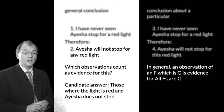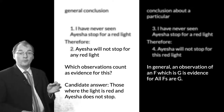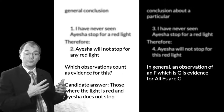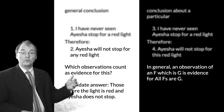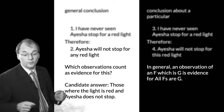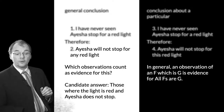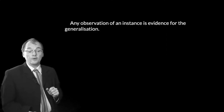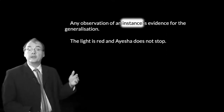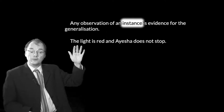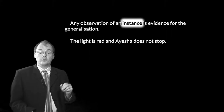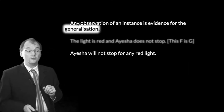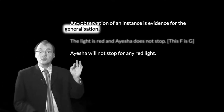And I guess you can already see roughly how to generalise that idea, so it's quite attractive. In general, we might say an observation of an F which is G is evidence for the generalisation that all Fs are Gs — that all red lights are such that Aisha will not stop for them. Very simple. So attractive for its simplicity, and therefore worth considering carefully. Here's the claim again: an observation of an instance is evidence for the generalisation. By an instance, I mean a particular observation — an observation of a particular situation, such as the light is red and Aisha does not stop.